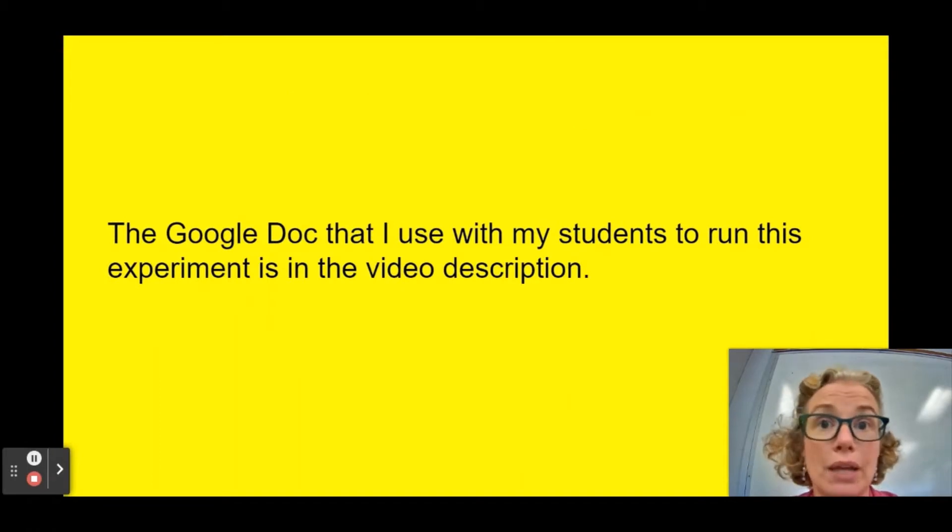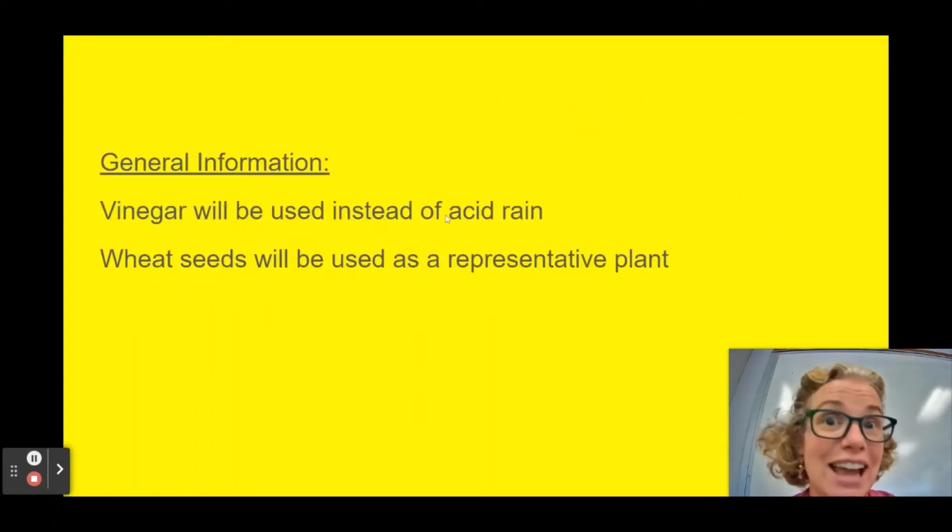I will put a Google Doc that I use with my students in the video description. We're not collecting actual acid rain, that'd be pretty hard to do. So we're going to substitute in vinegar to represent acid rain and use wheat plant seeds to represent plants. Whether or not these are fair substitutions is something that you will need to evaluate when you are writing your conclusion.